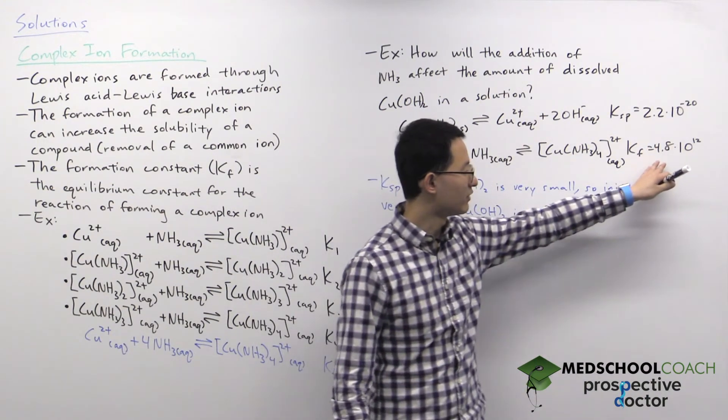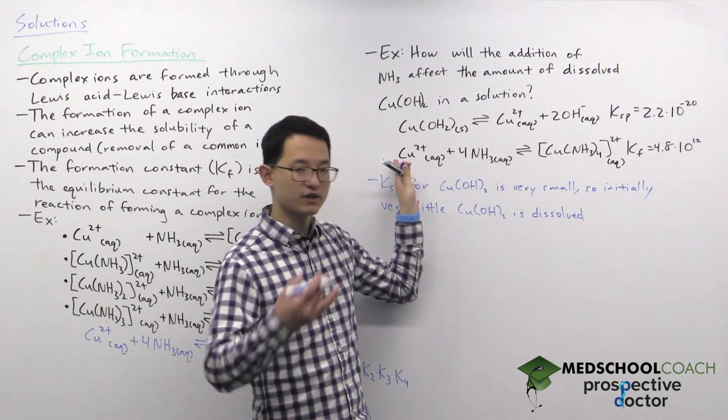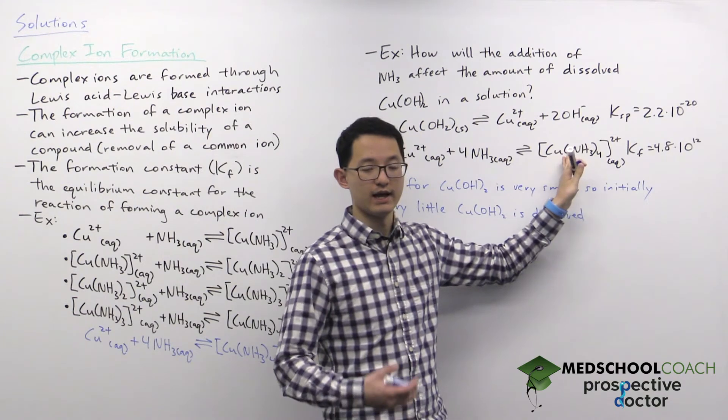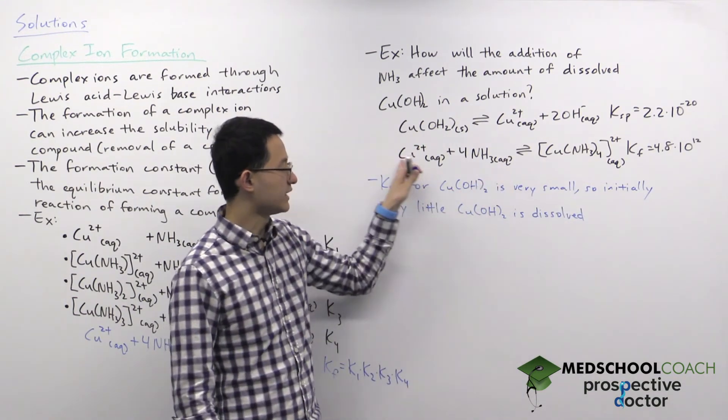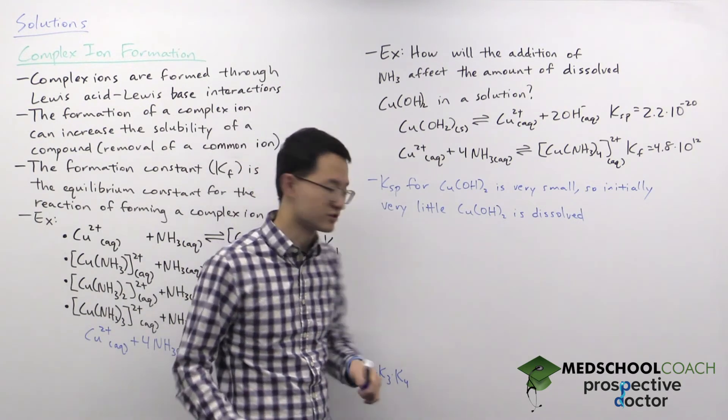So since this is very favorable, when you add ammonia it's going to use any of the copper cations in solution to form the complex ion.